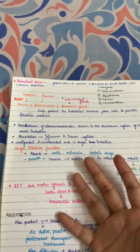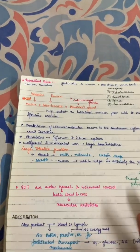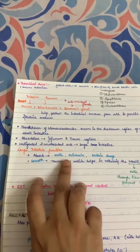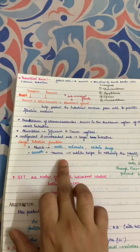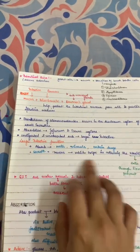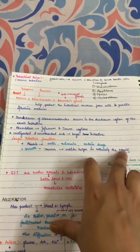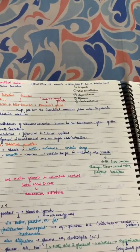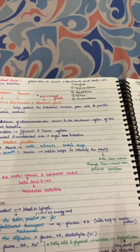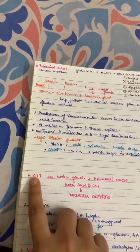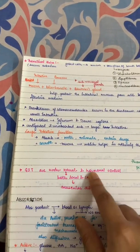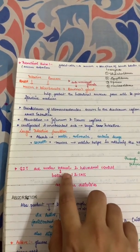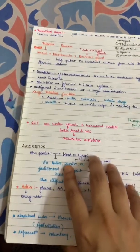The rest of the undigested food mixes with mucus in the large intestine. Here, water, minerals, and certain drugs are absorbed. Mucus is mainly secreted, which adheres to waste particles. Food then enters the cecum through the ileocecal valve, which prevents backflow. The GIT is also under both neural and hormonal control — neural control is both local and CNS-based, and it mainly controls muscular activity.